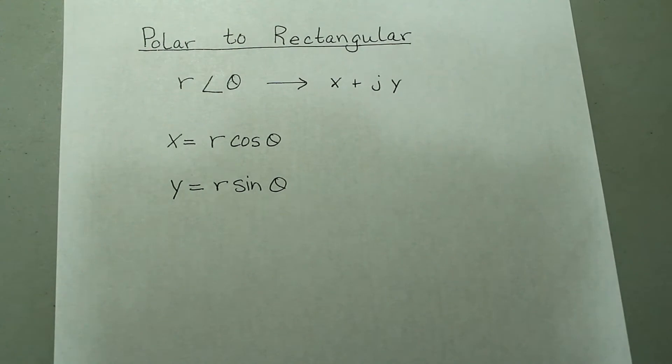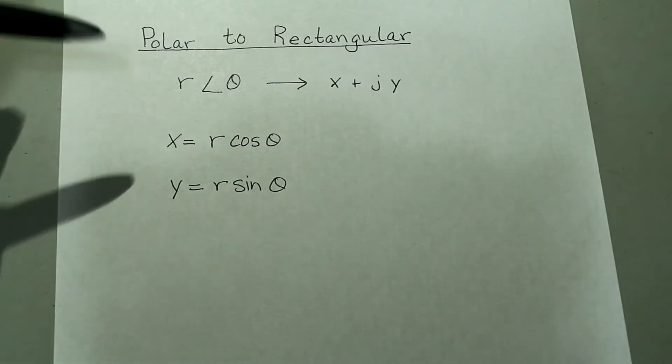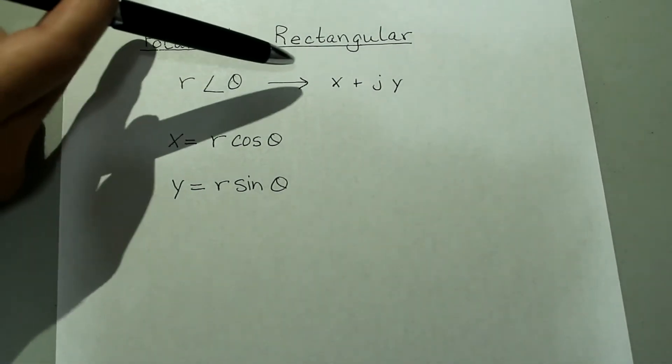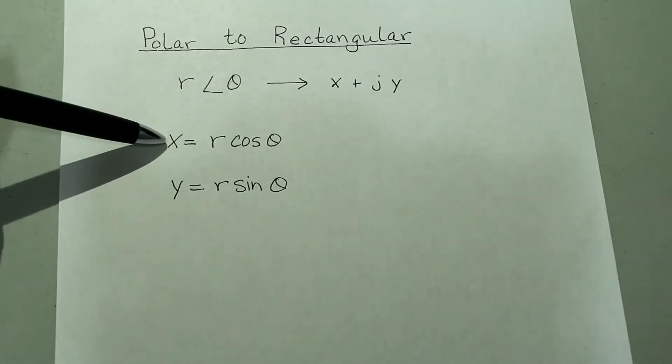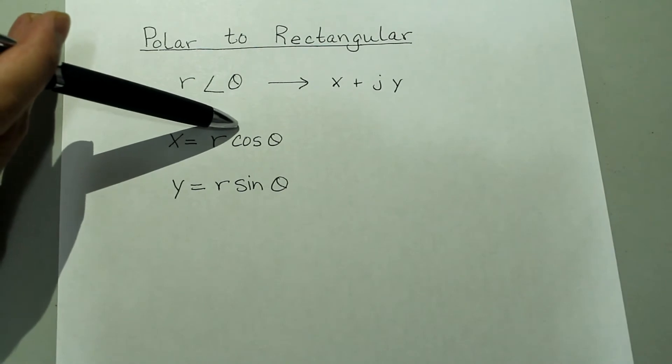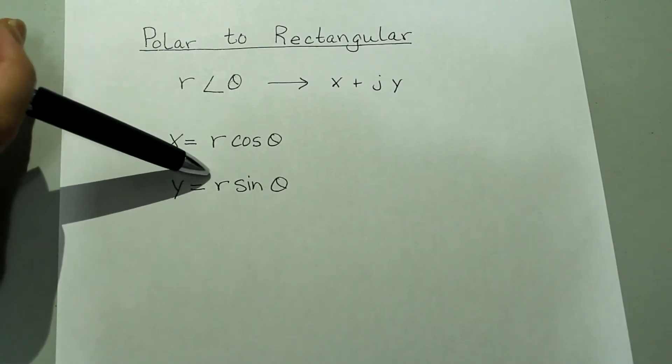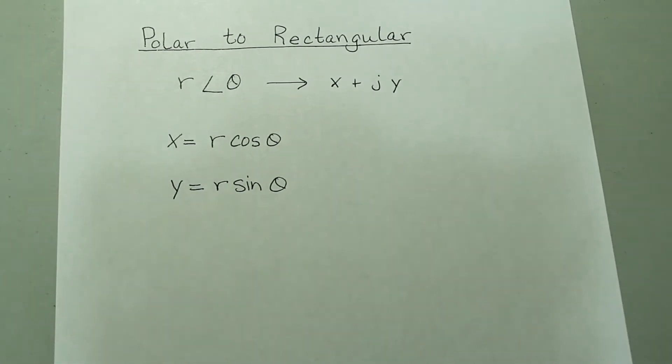Now if you were to go from polar to rectangular, that's when you have r and theta, and you're trying to go to the form x plus jy, x would be equal to r times cosine theta, and y would be equal to r times sine theta. We don't have to worry about all these steps because the calculator has built-in features that allow you to convert from polar to rectangular and vice versa.